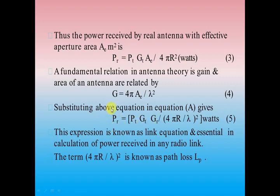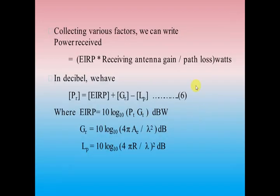To increase the amount of power received, that is the sensitivity of the receiver antenna, we need to increase PT times GT times GR, and minimize the path losses (4πR/lambda)². So the expression for received power equals the multiplication of EIRP times receiver antenna gain divided by the path loss. In decibels, PR equals EIRP plus receiver antenna gain minus path losses.